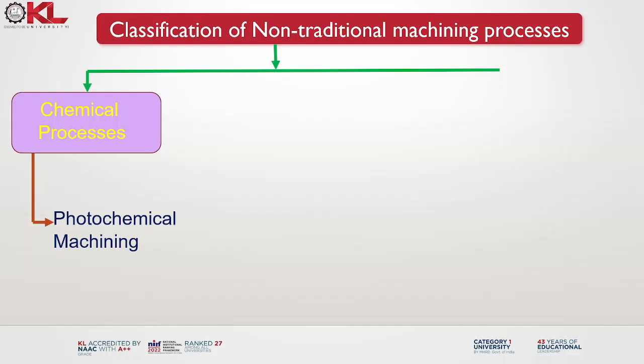Photochemical machining is used in various industries including electronics, aerospace, automotive, medical devices, telecommunications and precision engineering. Chemical machining, also known as chemical milling or chemical etching, is a manufacturing process that selectively removes material from a workpiece through chemical reactions. It is a non-traditional machining method used to produce complex shapes, thin sections and highly accurate components.